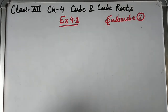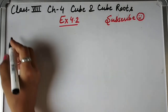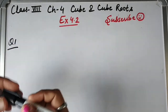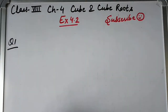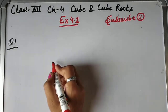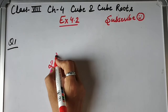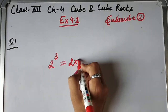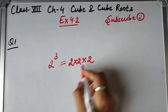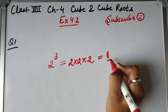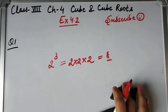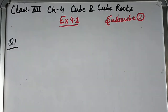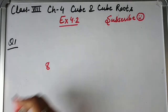Today we have to see Exercise 4.2, Question Number 1. The question says: find the cube root of each of the following numbers. To understand this, if we need to find the cube root of 8, what do we do? We take 2 and multiply it 3 times, and that gives us our answer. So cube root of 8 gives us 2.